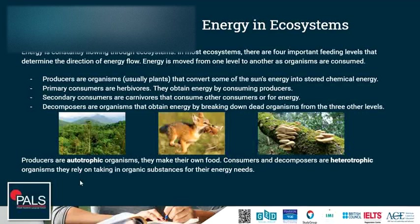Two other terms are autotroph and heterotroph organisms. Producers are autotrophic organisms — they make their own food. Whereas consumers and decomposers are heterotrophic organisms — they rely on taking in organic substances for their energy needs. Energy flows through ecosystems, which means the energy enters the ecosystem from outside, from the sun's energy, and will flow through and eventually leave the ecosystem again, usually in the form of heat.